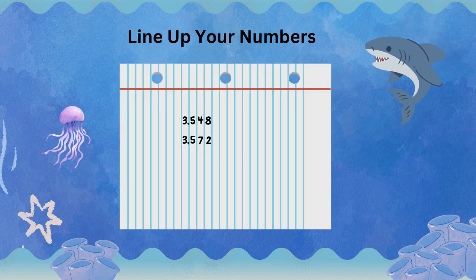Turn your notebook paper sideways and line up your numbers. You do that by writing each number in between the two blue lines. The first number goes on the top and the second number goes on the bottom.